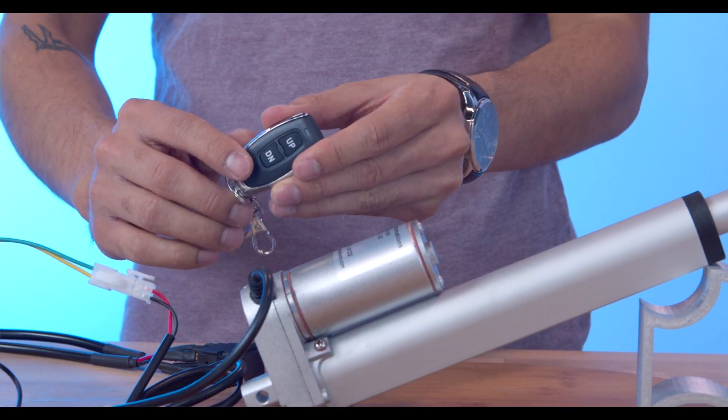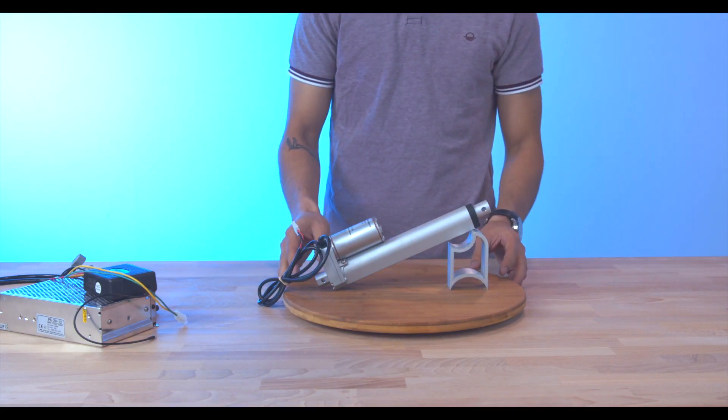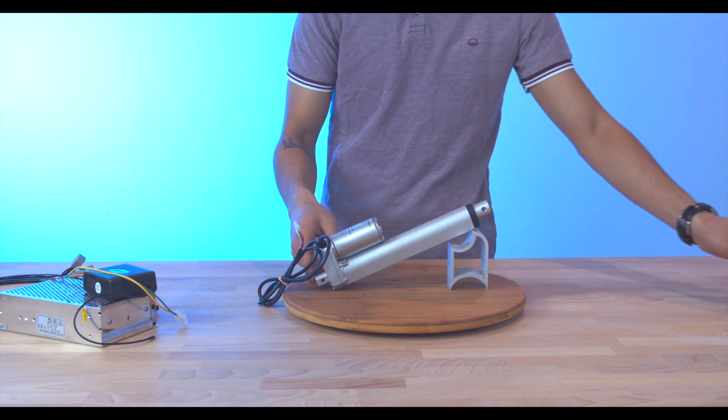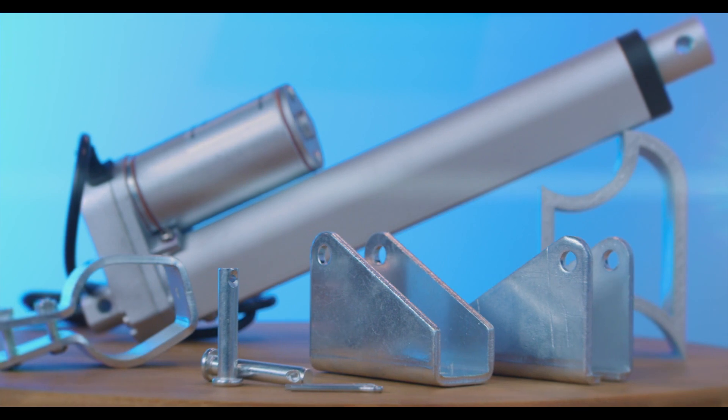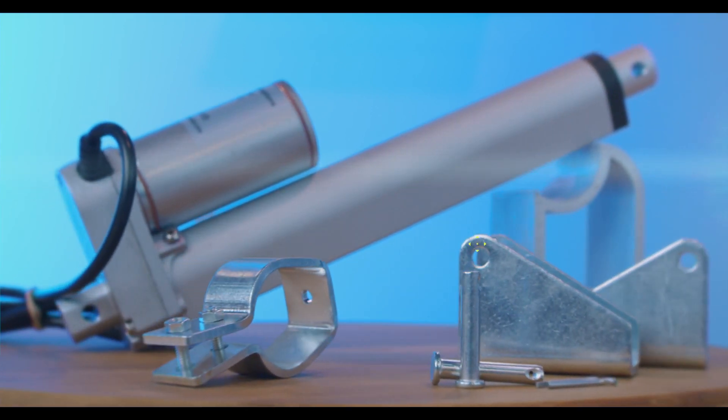Here at Progressive Automations, we also design and manufacture compatible systems and accessories for all of our actuators. When looking at mounting brackets, the PA14 is compatible with our BRK14 mounting brackets. These can be installed at the stroke and motor end.